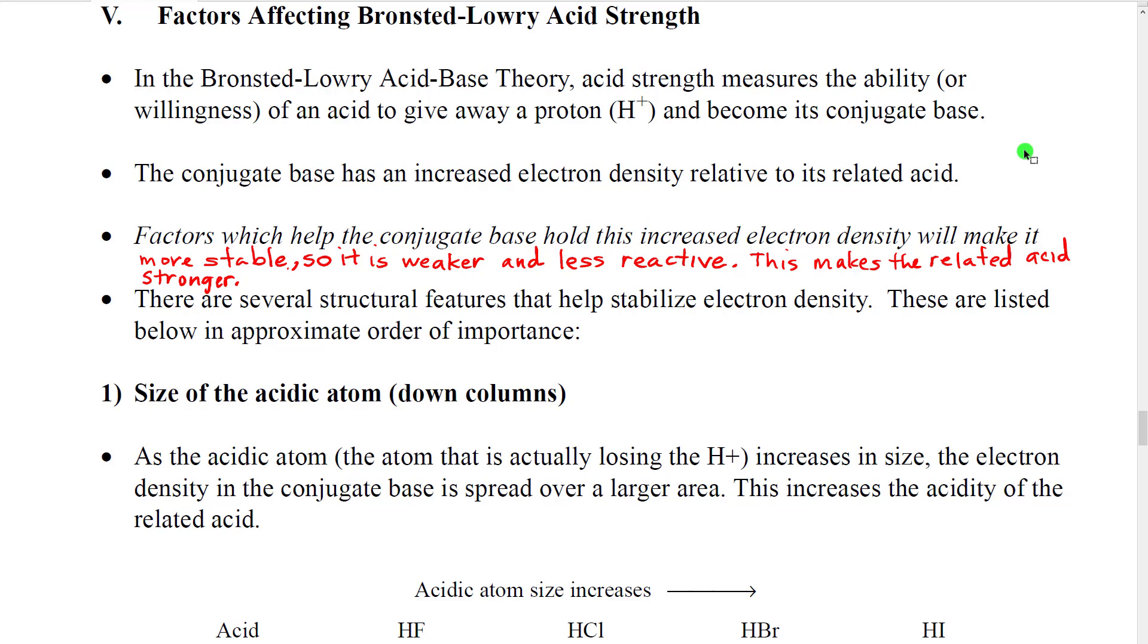And so, we'll have more atoms in the acid, with the same number of electrons. So, the electrons will be spread out more. Their density will be lower. When the acid gives away hydrogen plus, the density of the electron increases. They're squeezed into a smaller area.